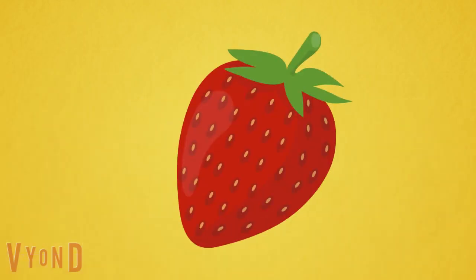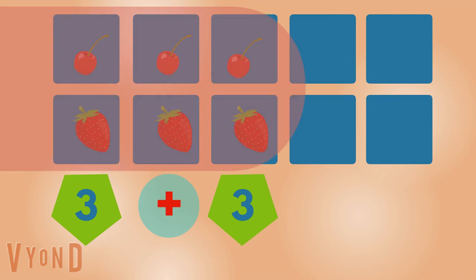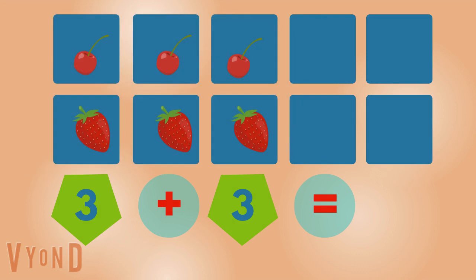Strawberry. One, two, three. Three strawberries. One, two, three, four, five, six. Six fruits.